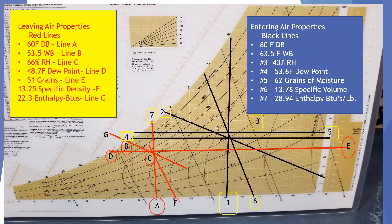And we have 13.25 specific density at line F. And a 22.3 enthalpy in BTUs on line G.